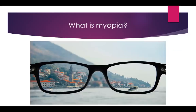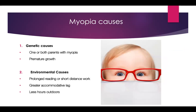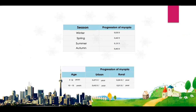In order to understand how we can stop progression, we have to understand what myopia is. There can be genetic causes — if you have one or both parents with myopia, it tends to run in families. Environmental causes include prolonged reading or short distance work, greater accommodative lag, and less time outdoors. Looking at seasons, in winter in the northern hemisphere, the progression of myopia is higher because people stay indoors longer and spend less time outside.